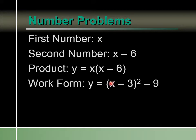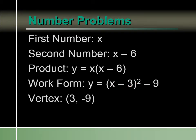We're going to take half of negative 6, which gives us 3, and then 3 squared is 9. So we're going to add 9 inside the parentheses and subtract 9 on the outside. Then x squared minus 6x plus 9 factors to our perfect square, x minus 3 squared. Now that we have our work form, we can get our vertex, which is (3, negative 9).